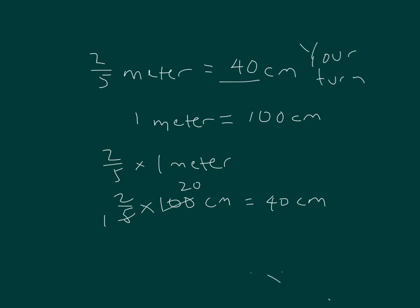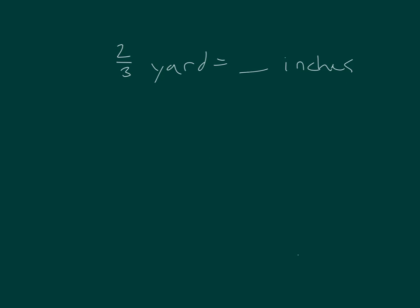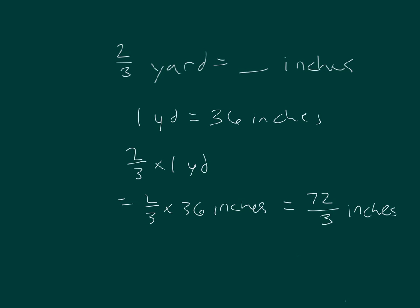One-fifth is equal to 20. Two-thirds of a yard equals how many inches? I know that one yard is equal to 36 inches. So two-thirds times one yard equals two-thirds times 36 inches equals two times 36 is 72, 72-thirds inches. Two times three is six. Seven minus six is one. Bring down the two. Four times three is twelve. Twelve minus twelve is zero. Twenty-four equals twenty-four inches. Two-thirds of a yard is equal to twenty-four inches.